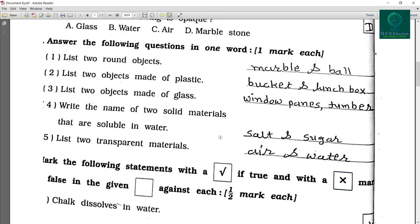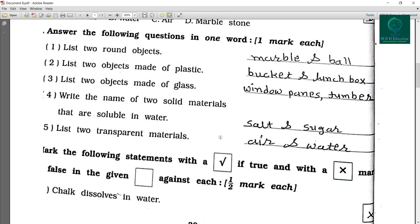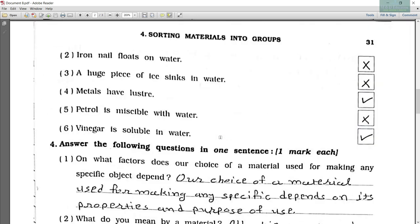Now the true and false. The first one is chalk dissolves in water, so the answer is wrong. Second one, iron nail floats on water, also wrong. A huge piece of ice sinks in water, so it's wrong.